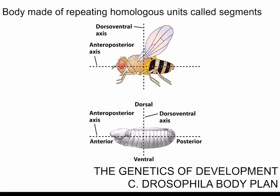There's the anterior-to-posterior axis, or the anteroposterior axis, and the other axis is the dorsal-to-ventral axis, or the dorsoventral axis. Also, as we have discussed before, the body of the fruit fly is divided into repeating units called segments: there are eight abdominal segments, three thoracic segments, and three segments in the head. Each segment is specialized to have particular organs or appendages. For example, the first thoracic segment has the first pair of legs, the second thoracic segment has the second pair of legs and the wings, and the third thoracic segment has the third pair of legs as well as a specialized flight organ called the haltere.